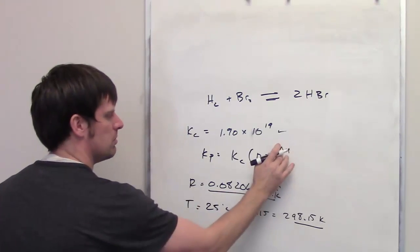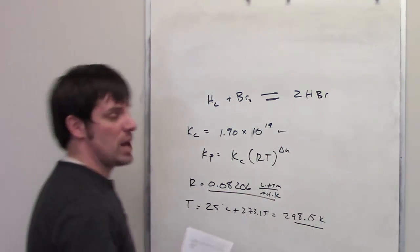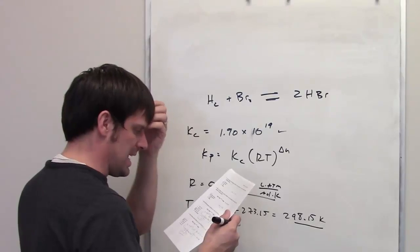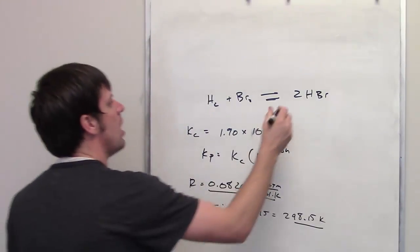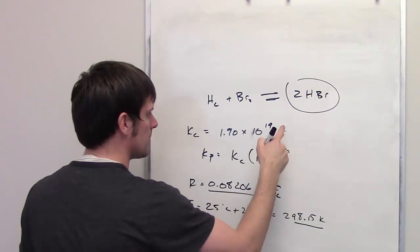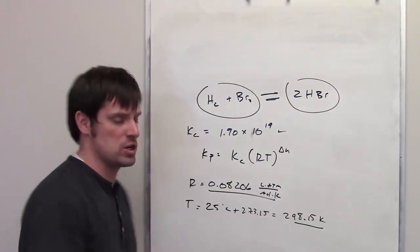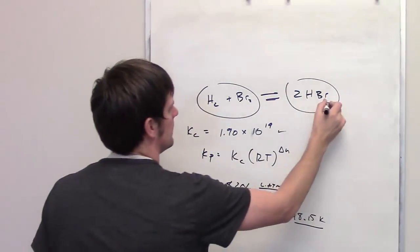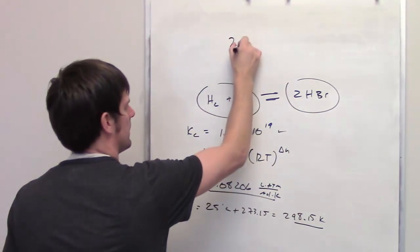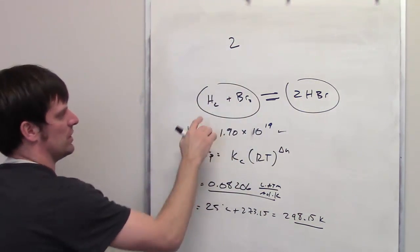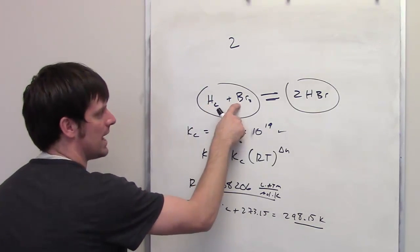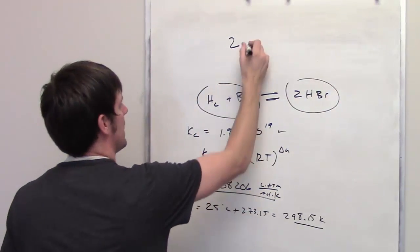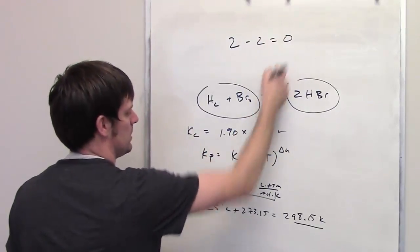What is delta N? Delta N is the change in the number of gas moles as you go from left to right. On the right side there are two gas moles. On the left side there is one gas mole of H₂ and one gas mole of Br₂, so two gas moles on the left. Two minus two equals zero — so delta N is 0.